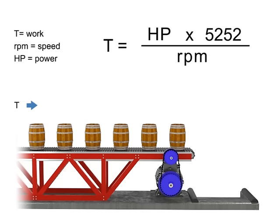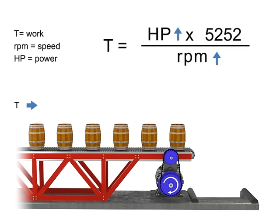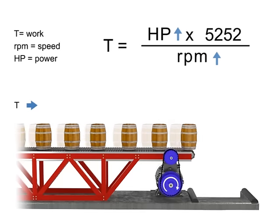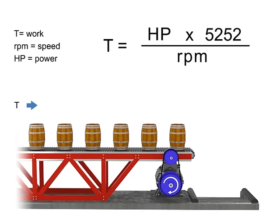Let's say we wish to keep torque constant but want to increase the production of barrels. If the torque, or number of barrels, on the conveyor belt remains constant but speed increases, then the horsepower of the motor also increases. In other words, a more powerful motor is required to produce the same amount of torque more quickly. Similarly, the opposite is true: if we wish torque to remain constant and decrease speed, then the horsepower of the motor also decreases.